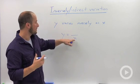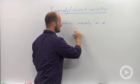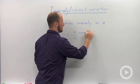Y varies inversely as x, we divide, and with any variation problem we always need a constant.